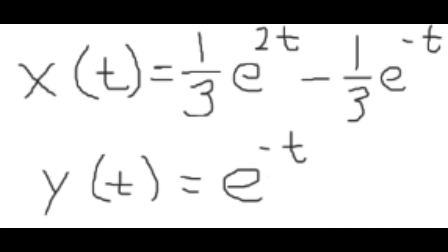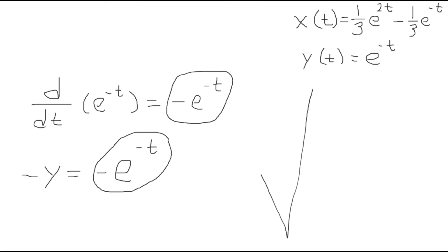So it would seem like I had my solutions for x and y. But before I went on, I had to test to see if these worked in the differential equations given at the beginning. Starting with dy/dt equals negative y, I rewrote these as two separate equations and plugged y in for both. I got the same answer for both: negative e to the power of negative t. Check!